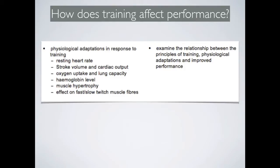Physiological adaptations in response to training include resting heart rate, stroke volume and cardiac output, oxygen uptake and lung capacity, haemoglobin level, muscle hypertrophy, and the effect on fast and slow twitch muscle fibres.